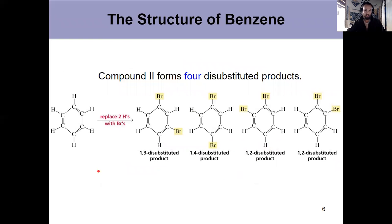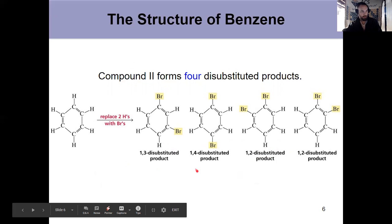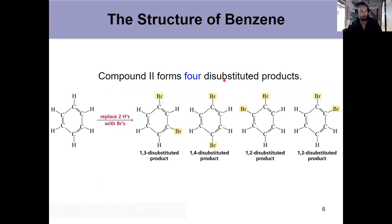And what about the other one with the alternating single and double bonds? Replace it with two bromines in this case, and it's possible to get four different disubstituted products. One where they're a carbon apart, one where they're two carbons apart, and then two different structures where they're adjacent, but these would be different based on if they're separated by a single bond or a double bond. Due to the difference in length of carbon hydrogen bonds, we get four different products, meaning that there are no structures that have been shown yet that meet all the evidence that had been presented for benzene.